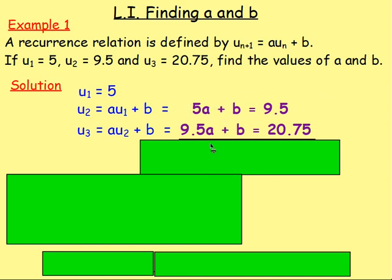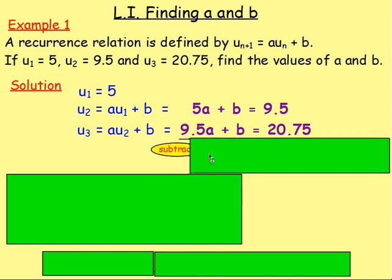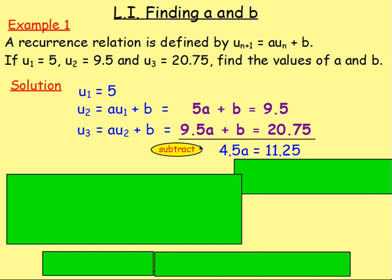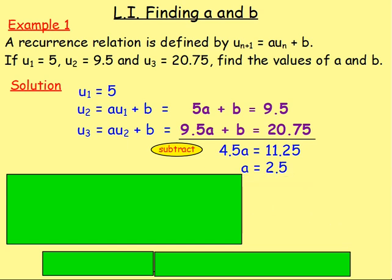From here, we can find out the values of A and B. You could multiply equations through by a negative to cancel B, but something simpler is to just subtract. If you do the bottom equation minus the top equation: 9.5A take away 5A leaves 4.5A; B take away B is zero; and 20.75 take away 9.5 is 11.25. So 4.5A equals 11.25, therefore A equals 2.5.